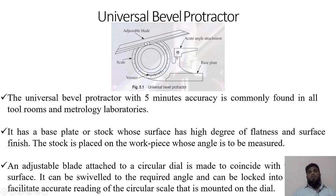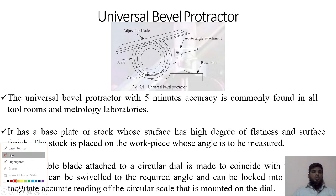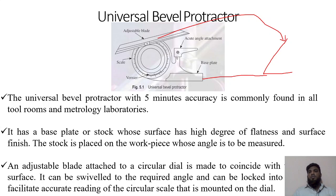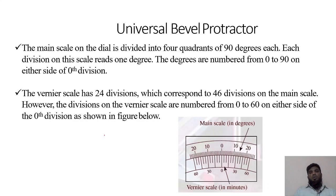An adjustable blade is attached to the circular disc and is used to coincide with the angular surface being measured. For example, if you want to measure an angle, this blade will come in contact with the surface and be aligned parallel to it. The angle obtained between the base plate and the blade is then recorded and studied. The universal protractor uses the same vernier caliper principle with a main scale and a vernier scale.